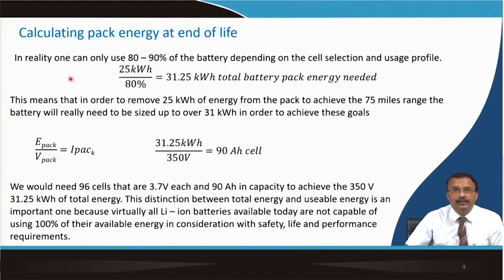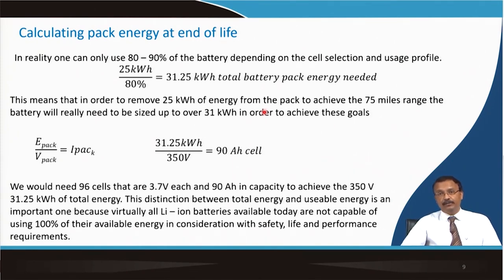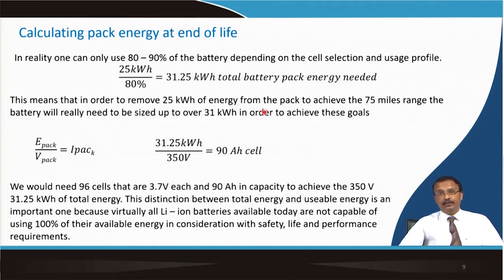Pack energy and end of life can also be calculated. In reality, 80 to 90 percent of the battery can be used depending on cell selection and usage profile. If you have a 25 kilowatt-hour energy requirement, 80 percent usability means you need 31.25 kilowatt-hours of total pack energy. Your application demands 25 kWh, but since you can only use 80–90% and cannot drain it fully, you need a larger pack — at least 31 kWh — to achieve a 75-mile driving range.